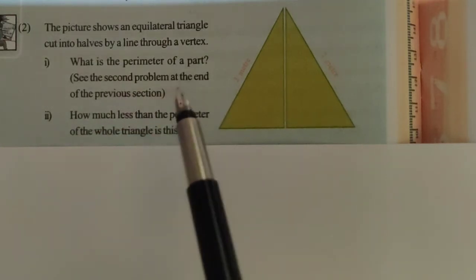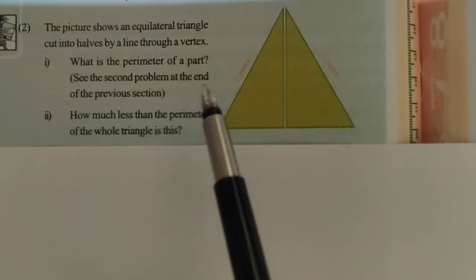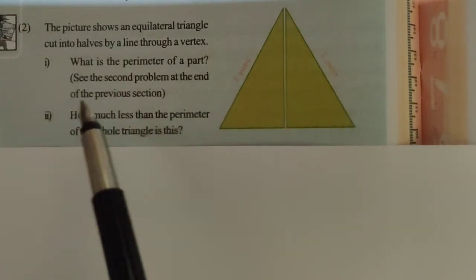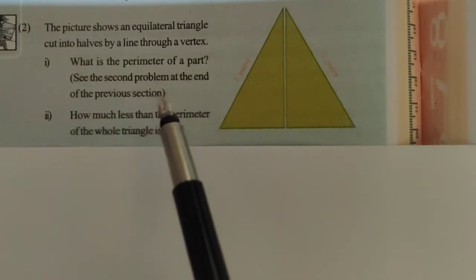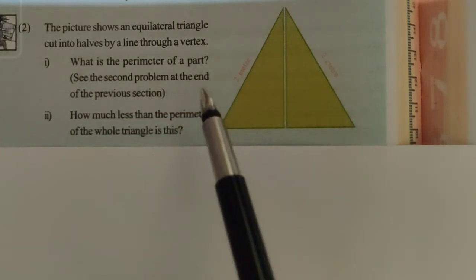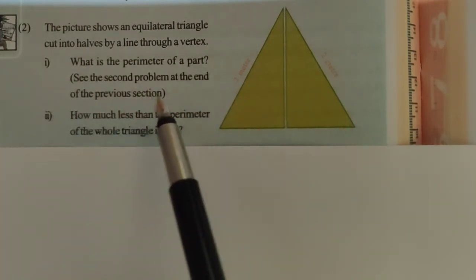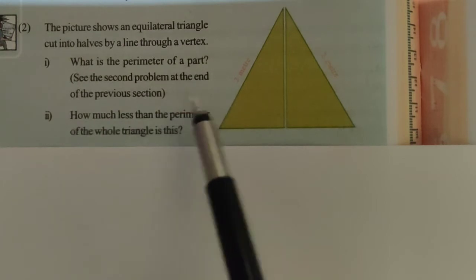The picture shows an equilateral triangle cut into halves by a line through a vertex. What is the perimeter of one part?